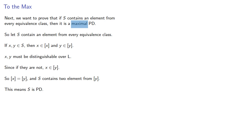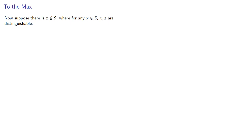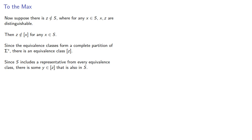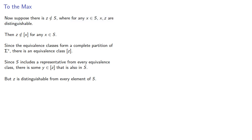Now we also want to prove that S is maximal — that we can't add additional elements. Suppose there's some element Z not in S where, for any X in S, X and Z are distinguishable. Then Z can't be in the equivalence class of X. Since the equivalence classes form a complete partition of our set of strings, there is another equivalence class containing Z. Since S includes a representative from every equivalence class, there has to be some Y in that equivalence class that's also in S. But Z is distinguishable from every element of S, so Z must be distinguishable from Y — but this means Y can't be in that equivalence class, a contradiction. Therefore there can't be some element not in S that is distinguishable from all elements of S, so S must be maximal.